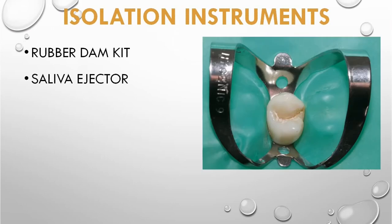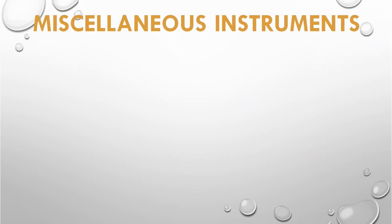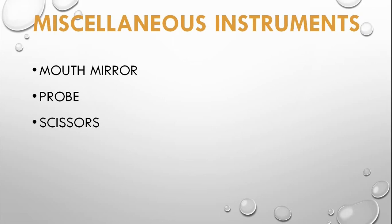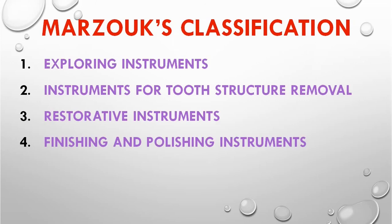Isolation instruments include the rubber dam kit — rubber dam sheet, rubber dam clamp, and more — which will be covered in a separate video. Also included are the saliva ejector, high volume evacuation, and cotton roll holder. The last type is miscellaneous instruments, which include mouth mirror, probe, scissors, pliers, and cotton tweezers.